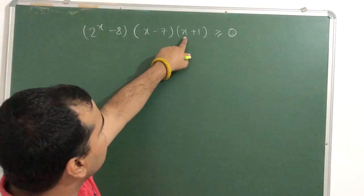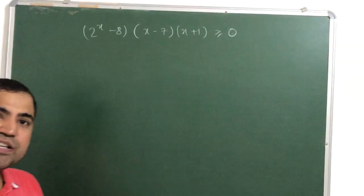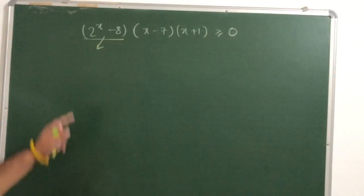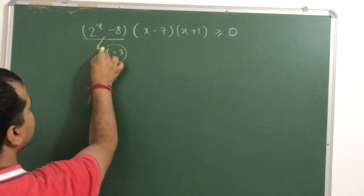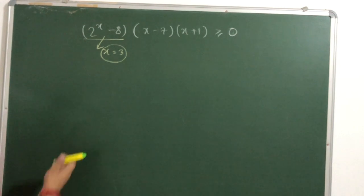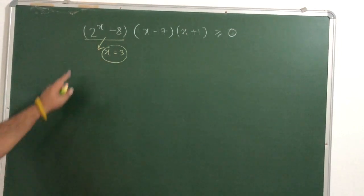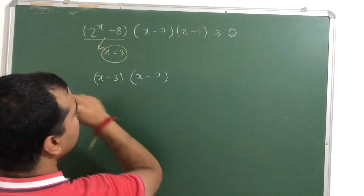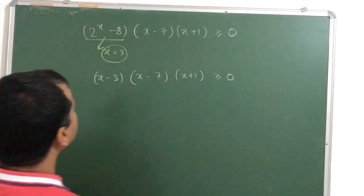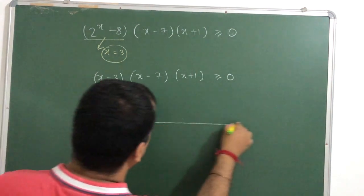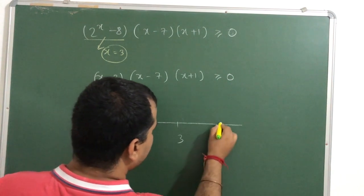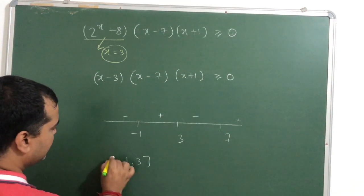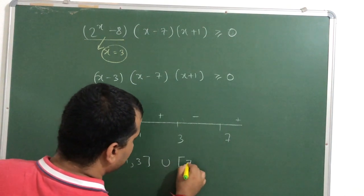Our next example is: (2 raised to x minus 8)(x minus 7)(x plus 1) ≥ 0. I need to find when 2 raised to x minus 8 equals 0. When x = 3, 2 raised to 3 = 8, so this equals 0. So I treat this factor as (x minus 3). The inequality becomes (x minus 3)(x minus 7)(x plus 1) ≥ 0. Plotting minus 1, 3, and 7 on the number line: plus, minus, plus, minus — greater than or equal to 0 gives minus 1 to 3, union 7 to infinity as our answer.